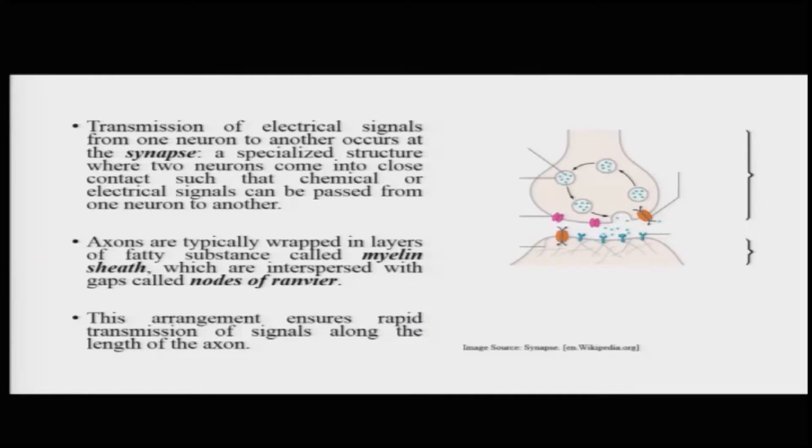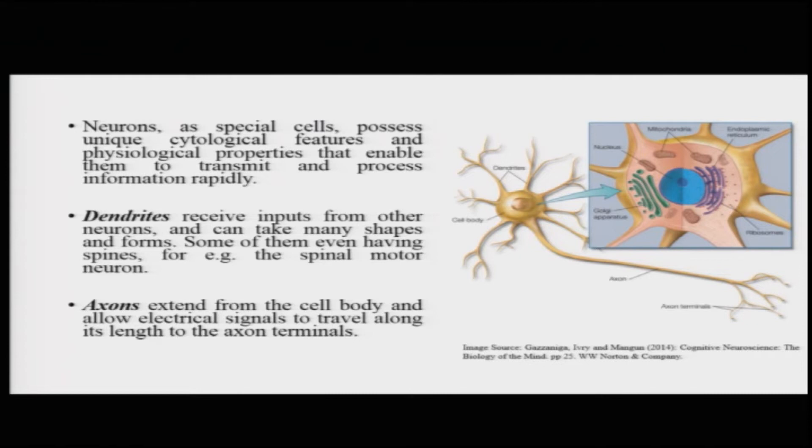An important property of axons is that the axon is covered with a fatty substance called myelin, and this layer is called the myelin sheath. There are gaps at regular intervals in this myelin sheath, which ensures the rapid transmission of the electrical signal along the body of the axon. It is an insulating material that allows the electrical signal to pass very quickly from the top of the axon to its bottom, where the axon terminals lie.